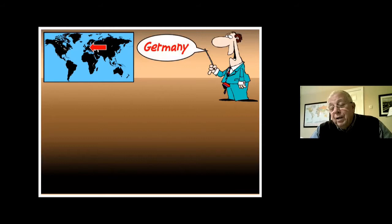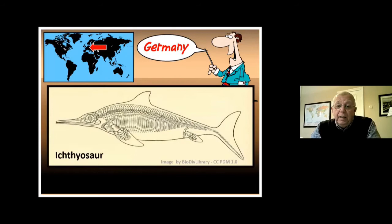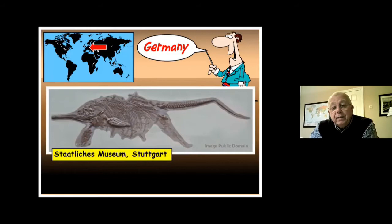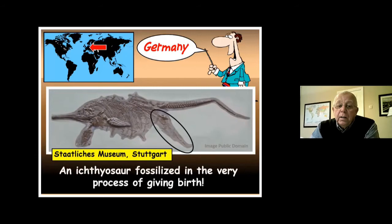We're going to travel around the world and look at some interesting fossils. There's an ichthyosaur in a museum in Stuttgart, Germany — a female ichthyosaurus fossilized in the process of giving birth, with one of her offspring leaving the birth passage, but before it could emerge it was buried by sediment contained in water and locked into the fossil record to be found years later by fossil hunters.